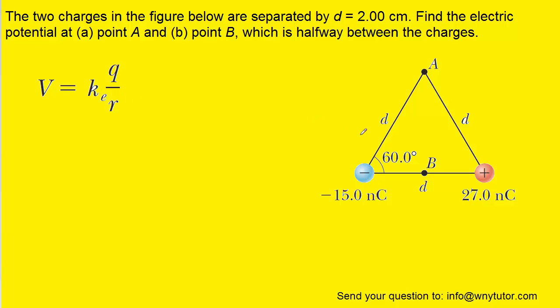Now the distance will be from the charge to whatever point that we're interested in. So for example, in part A, we're trying to find the electric potential at point A, so the distance we're going to use would be the distance from the negative charge to point A, and also the distance from the positive charge to point A.